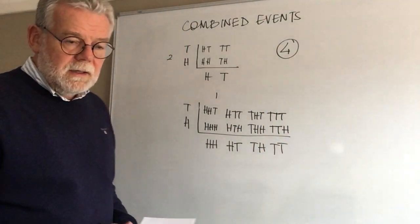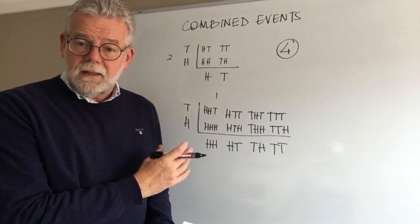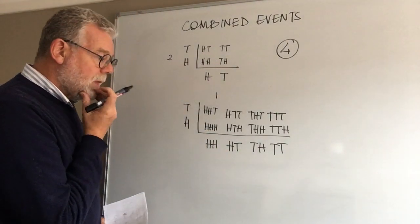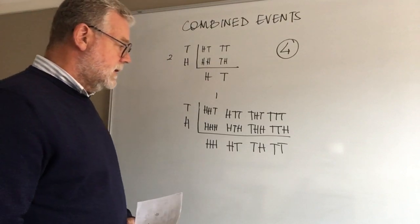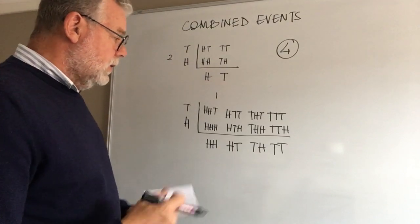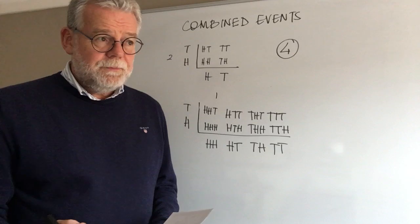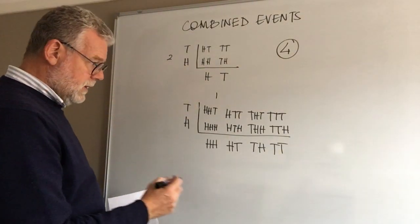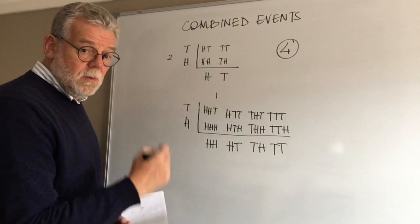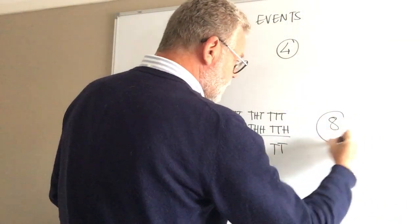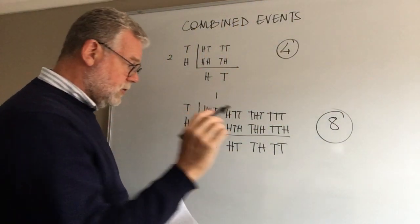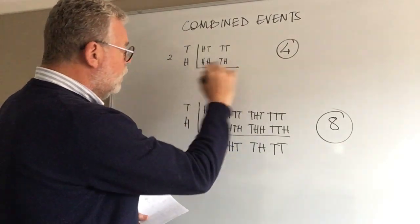Then the question will ask us to interrogate that information. It might say, what's the probability if I flip three coins that all the coins will be heads? We can look and think, how many options have we got? What are the outcomes? Well, this time we've got eight outcomes.